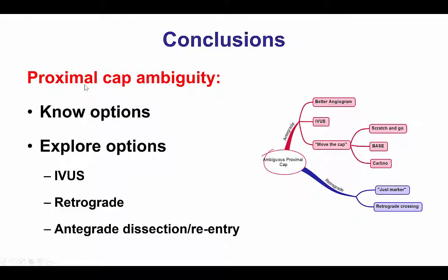This case illustrates some of the challenges associated with proximal cap ambiguity. The most important thing is to have options and understand what those options are — both antegrade and retrograde — and explore them sequentially. Antegrade options are always preferred over retrograde when feasible because of lower procedural risk. In this case we did IVUS-guided puncture first, which was unsuccessful; then tried retrograde, which did not succeed; then returned to antegrade, went subintimal, and used re-entry techniques to recanalize the vessel. Knowing the options and sequentially exploring them are the key to success in lesions with proximal cap ambiguity.